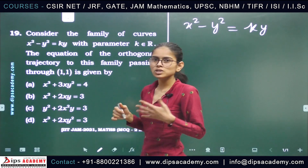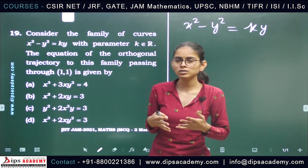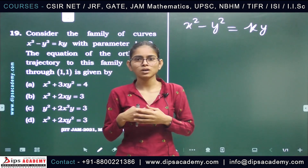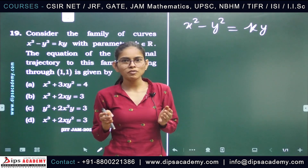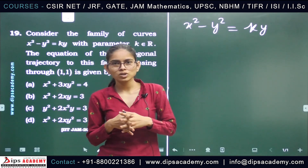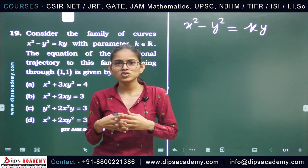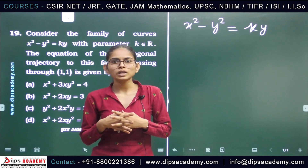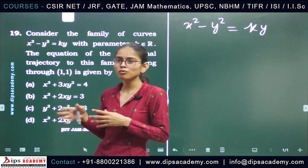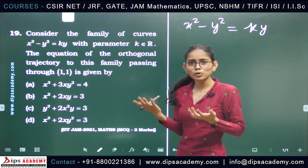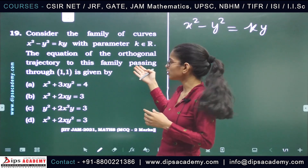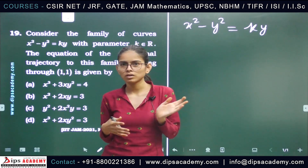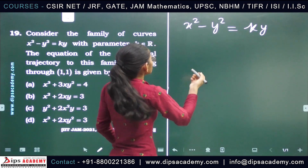Let's first understand what a trajectory is. A trajectory is a curve that cuts every member of a given family of curves according to some law. In an orthogonal trajectory, that curve cuts the given family of curves at 90 degrees. So we have to find the orthogonal trajectory of the given family. The procedure is to differentiate the given family of curves, then replace the slope dy/dx by its negative reciprocal, minus dx/dy.